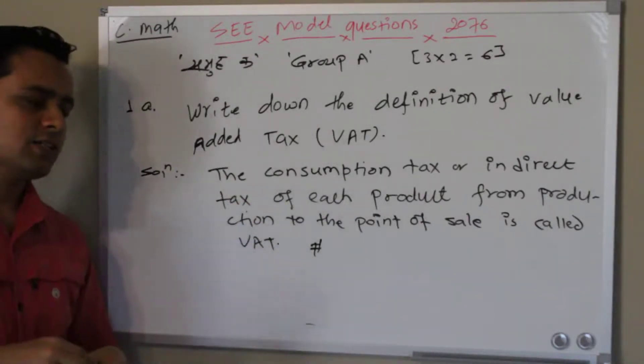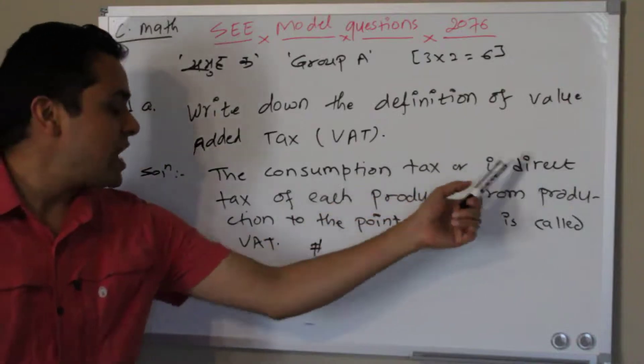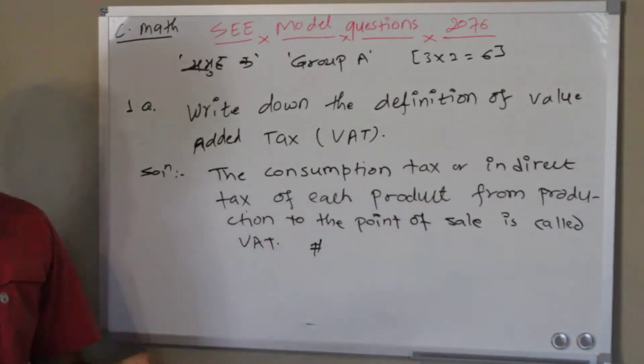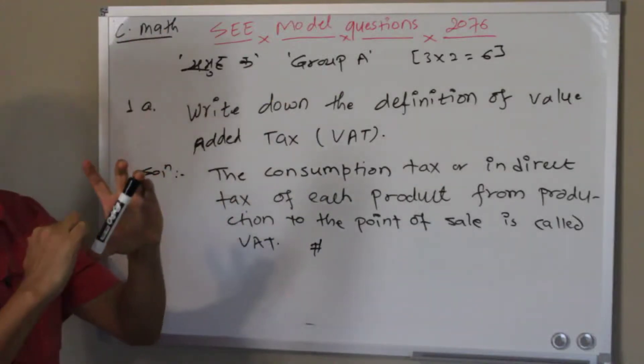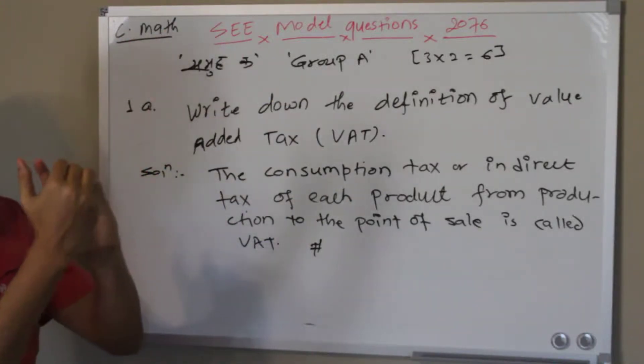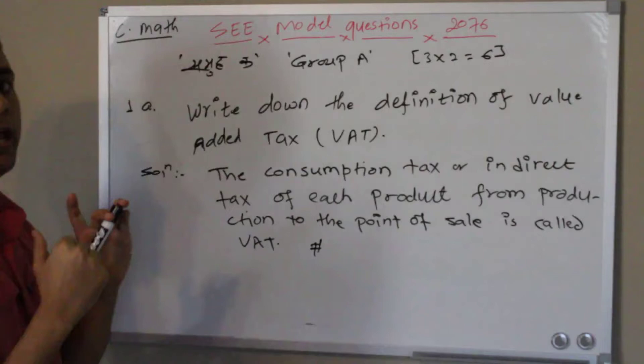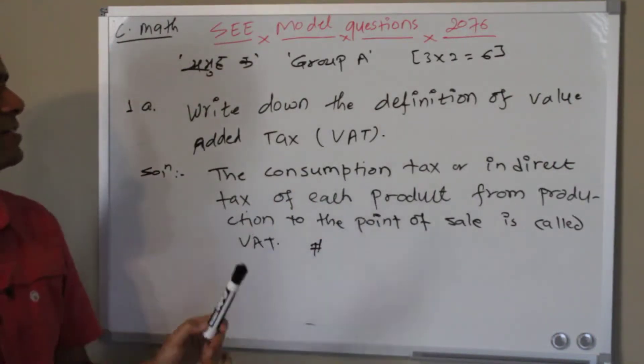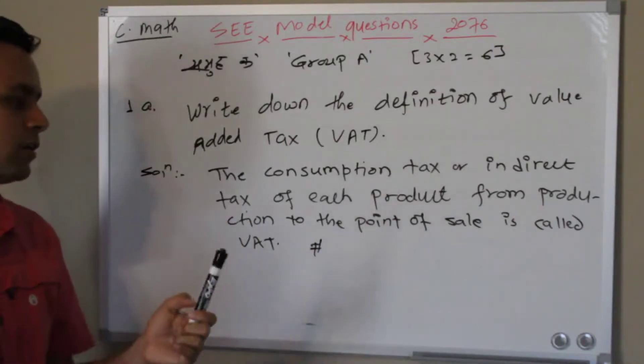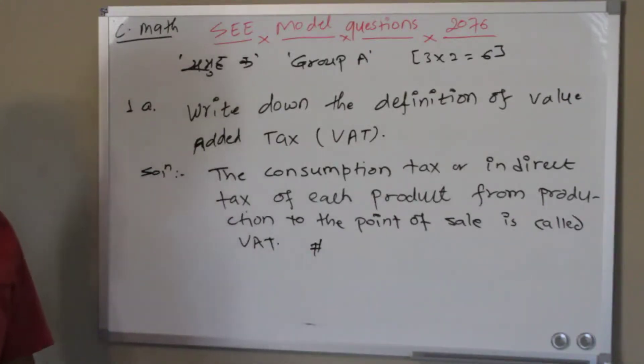Any kind of indirect tax of each product from the production to the point of sales - when they prepare these materials up to the ending point, which means sales point, all kinds of tax charged on this marker is called value-added tax. That's the answer, very short questions. Thank you.